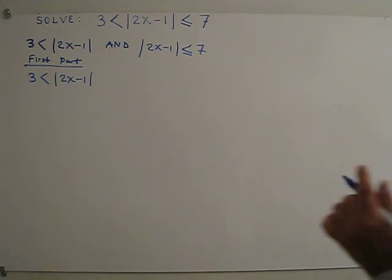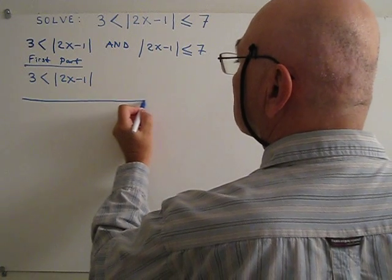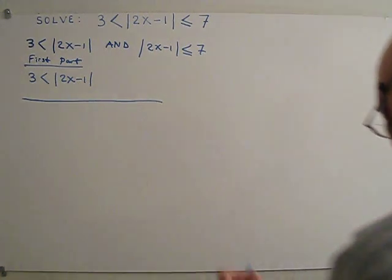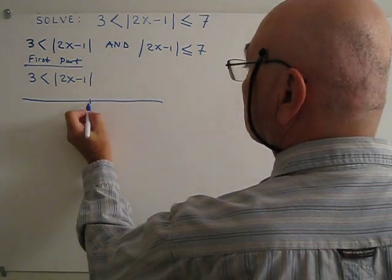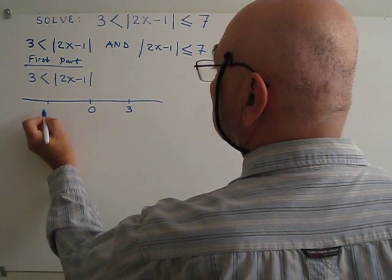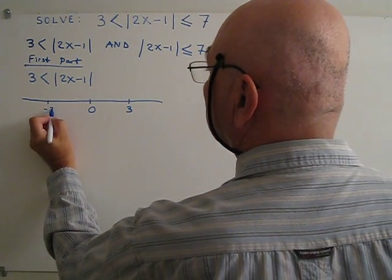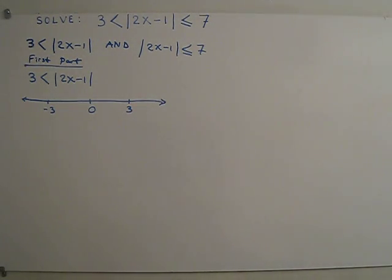If I show this on a number line — this is the number line, this is the origin, this is 3, and this is negative 3. The distance from the origin to 2x minus 1 must be greater than 3 in this case.